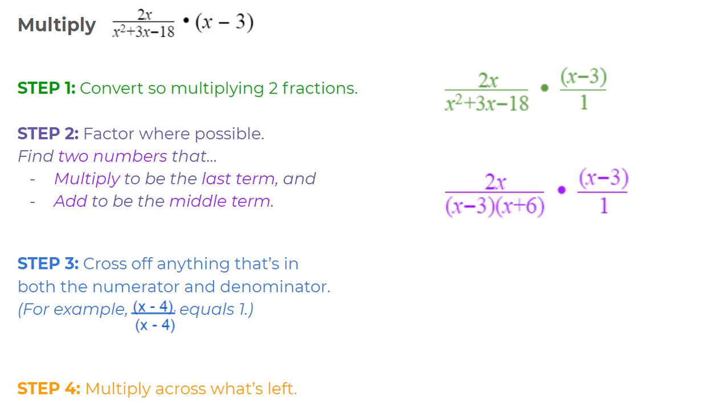Now I'm going to look at my numerators and my denominators, the top and bottom of both of my fractions, and see if I can cancel anything out. Remember, if you have a number like x minus 4 divided by x minus 4, anything divided by itself is 1. So if you have something in the numerator that's also in the denominator, you can cross them both off because anything divided by itself is 1. That fraction bar is like a division bar.